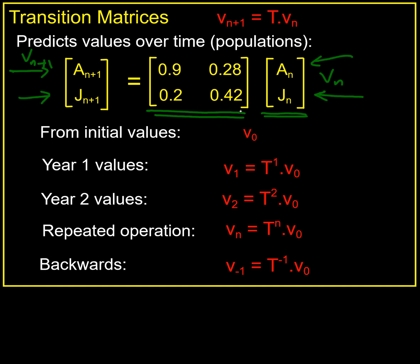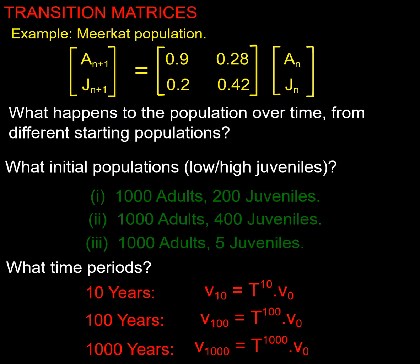We extended that idea that we could work out what the population in year n would be by just multiplying by the transition matrix n times. Now in this video I'd like to look at what happens over time and how much it's affected by the initial populations.